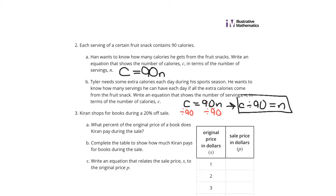If you've had 90 calories, 90 divided by 90 means you've had one serving. If you've had 270 calories, 270 divided by 90 would mean you've had three servings, and so on.